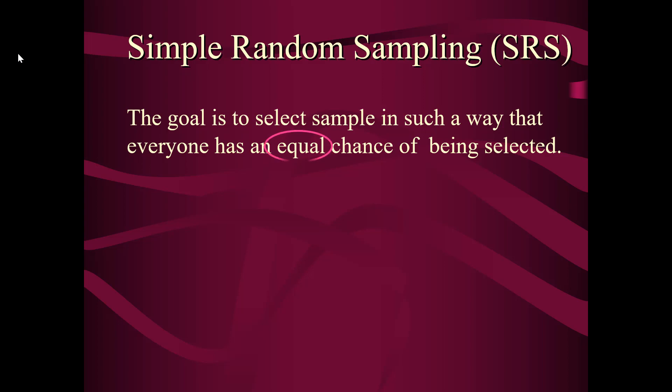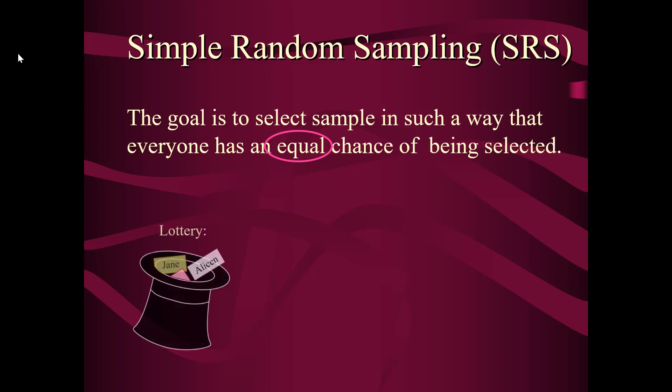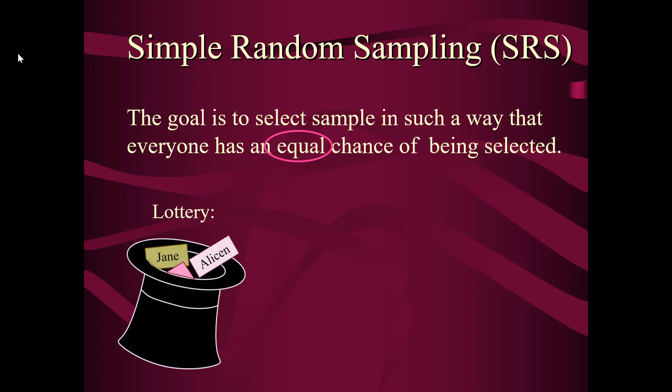The key word here is equal or known — I'll get to that in the next couple of slides. So imagine if we had names in a hat — the lottery method — and we were to just randomly pick names out of that hat. That's simple random sampling.